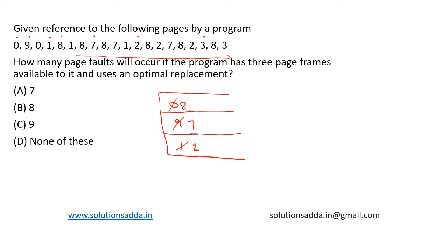Now eight, two, seven, eight, two are all hits. Three is a miss. We can replace either seven or two — let's replace seven with three. Then eight is a hit and three is also a hit. The total number of page faults is seven — one, two, three, four, five, six, seven. So option A, seven, is the correct answer. The dots represent page faults.